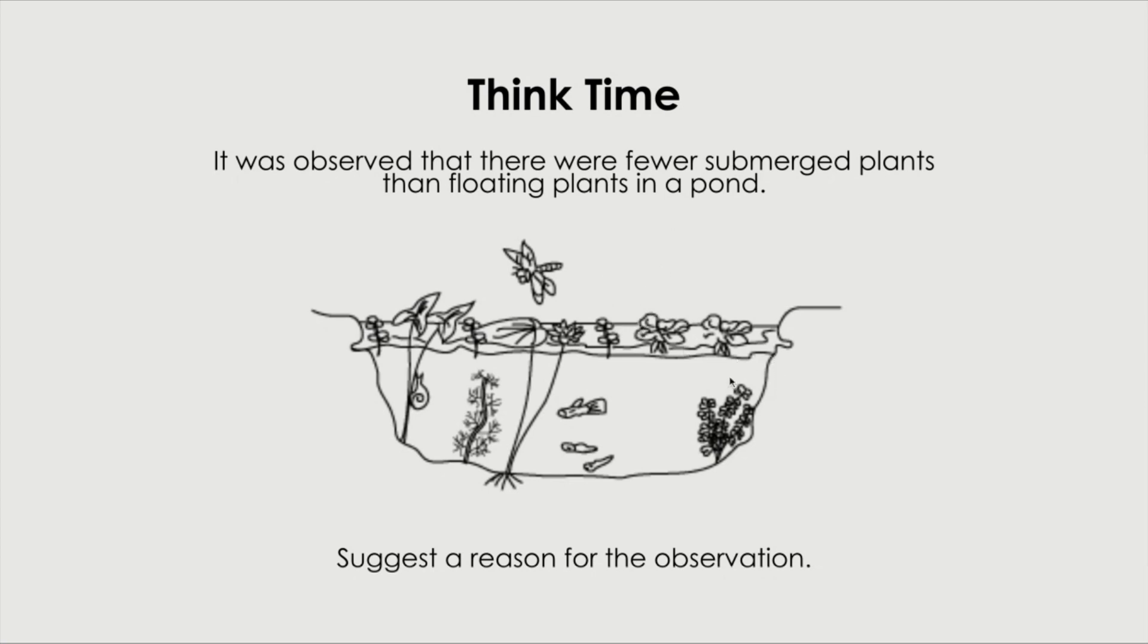Whatever plants that are submerged inside aren't going to be getting much sunlight because all of these floating plants are actually blocking the sunlight from entering. Which is why plants that are submerged will not survive. They might have died off. They might have withered off. This is the reason why the submerged plants are not as prevalent compared to the floating plants.